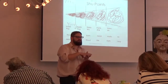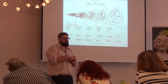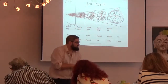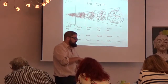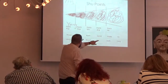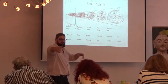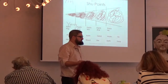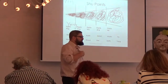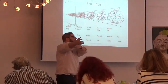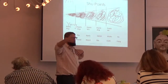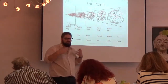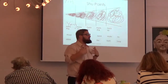What happens to energy when we make it more dense? It becomes hot and it becomes more volatile. So the further we are away from the body, the more volatile the Qi is. The further distally we are from the body, the more volatile the Qi becomes. Once something is volatile, it can be influenced.